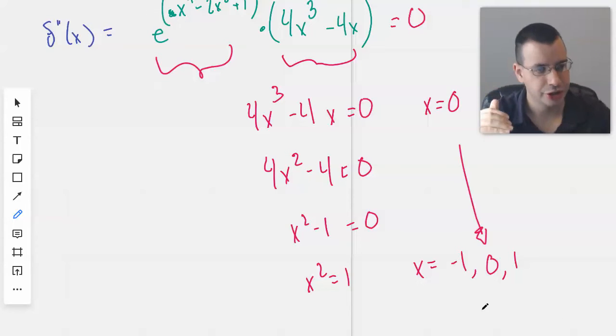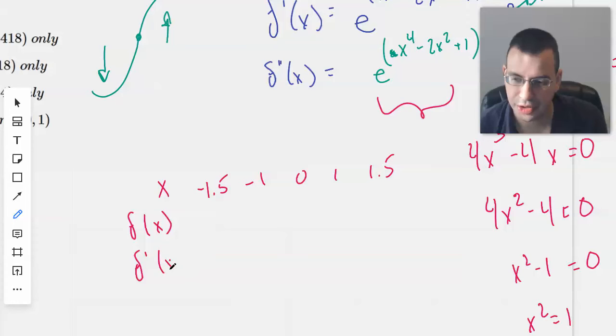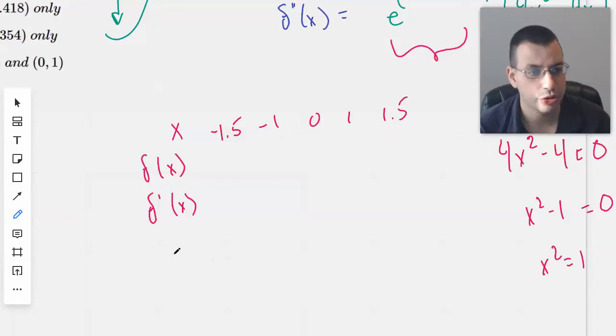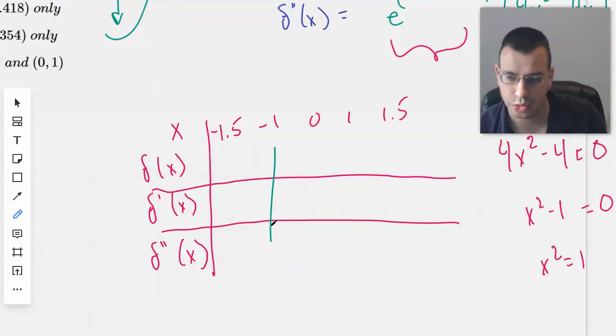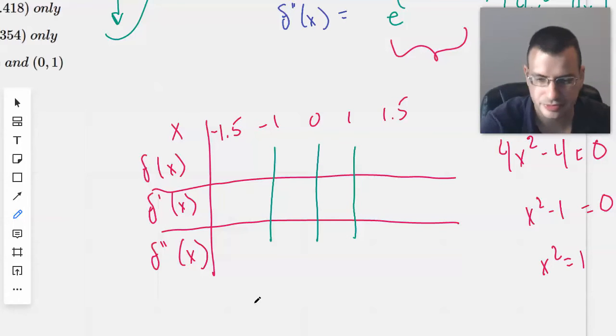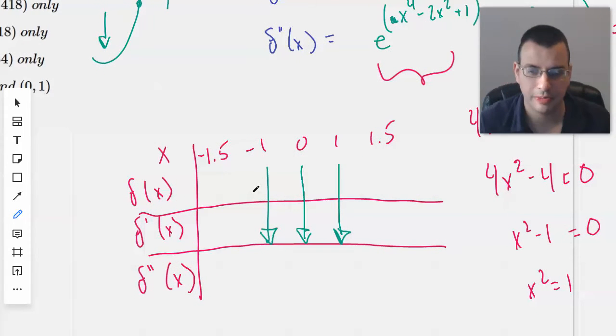These are our critical points for determining inflection points for the second derivative. Let's draw up a chart with -1.5, -1, 0, 1, 1.5. The -1.5 and 1.5 are our boundary limits, and -1, 0, and 1 are our critical points. Now we want to plug in values at the point here, here, here, and here - four values to find out where the concavity is plus or minus.